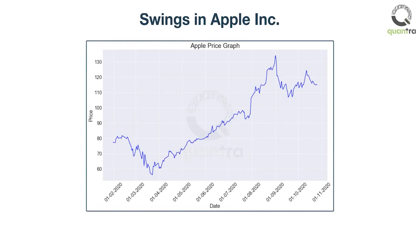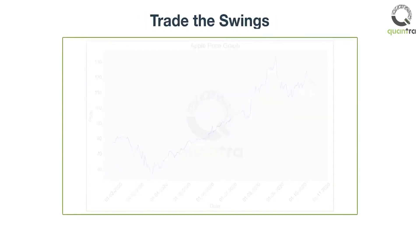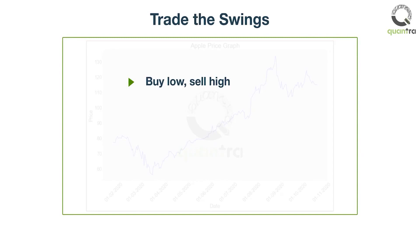Thus, even if the price is increasing, there are points where the price dips below for a temporary amount of time and then rises again. How can you trade on these swings? You must have heard of the old adage: buy low and sell high. This is the exact logic we will use in swing trading.